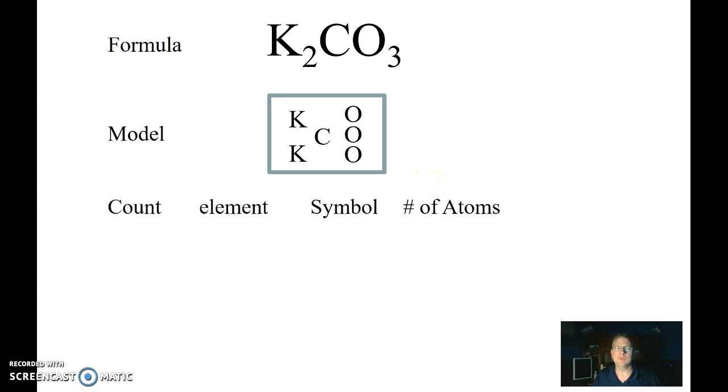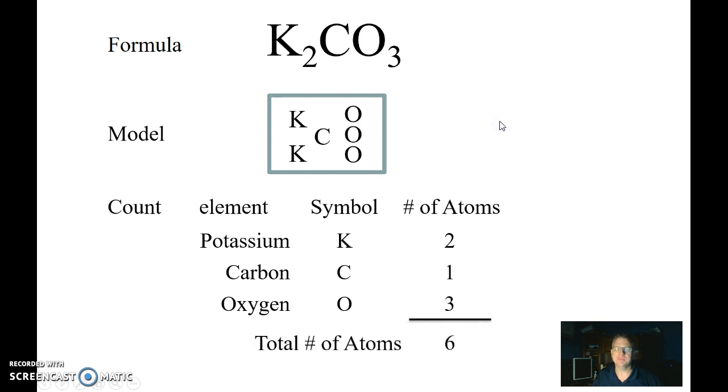So if we were going to go ahead and count up and take a look at what atoms are in here, we know that we have potassium, carbon, and oxygen. The potassium symbol is the big K, carbon C, oxygen O. We'd be able to count up these atoms by looking at the model very easily and just count them up. There's two potassiums, one carbon, three oxygens, which gives us a total of six atoms.